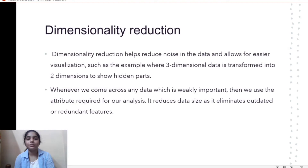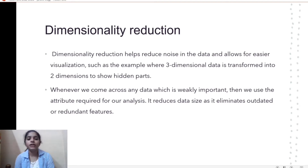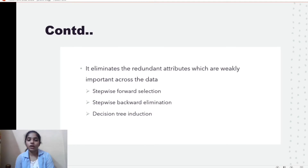Dimensionality reduction helps us reduce noise in the data and allows easier visualization — for example, transforming three-dimensional data into two-dimensional data to show hidden parts. It also reduces data by eliminating outdated or redundant features. There are three methods in dimensionality reduction: stepwise forward selection, stepwise backward elimination, and decision tree induction.